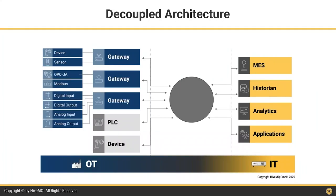What most companies are looking for is a simple, streamlined, and decoupled architecture. On the OT side: devices, PLCs, gateways, OPC UA, Modbus. On the IT side: MES systems, historians, analytics, applications. In the middle, this gray circle — companies want a central data broker able to move messages where they need to be in a decoupled way. Instead of point-to-point connections, you have a data hub that makes data available when an application, PLC, or gateway needs it — providing a nice decoupled architecture.